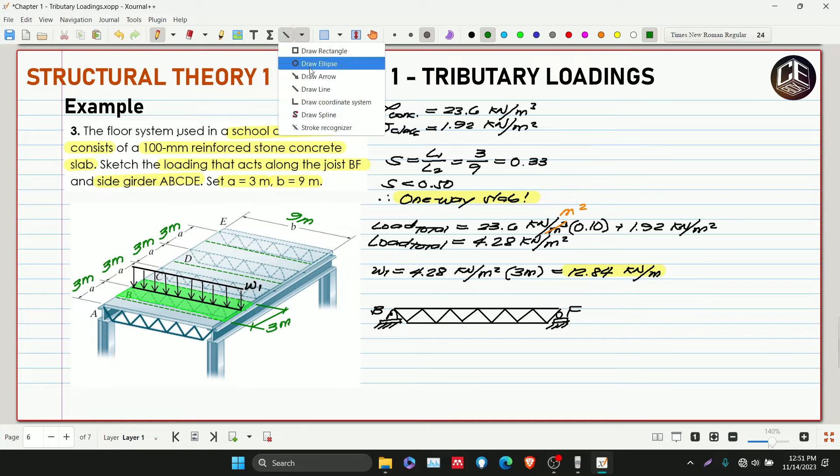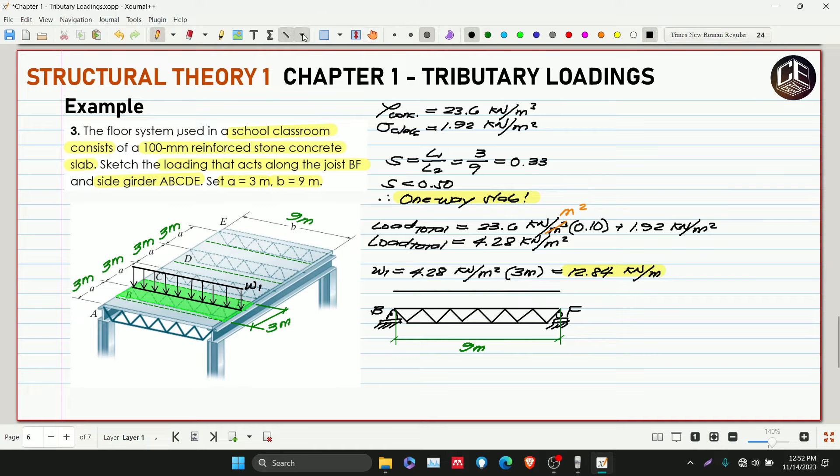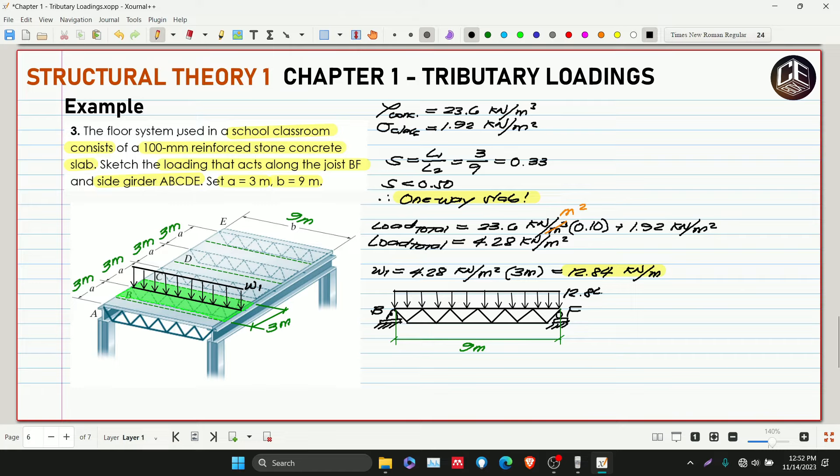The length is 9 meters. These are our loadings to make it easier to imagine. This is our 12.84 kilonewton per meter. Let's find the reactions for B and F. This is our RB and this is our RF.